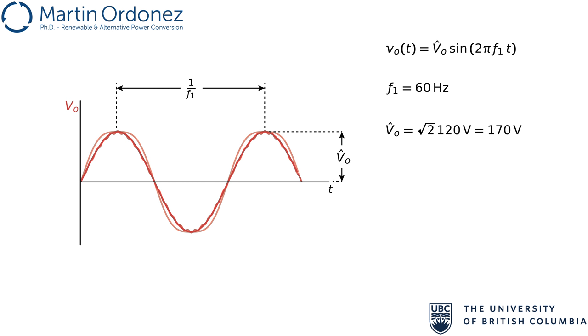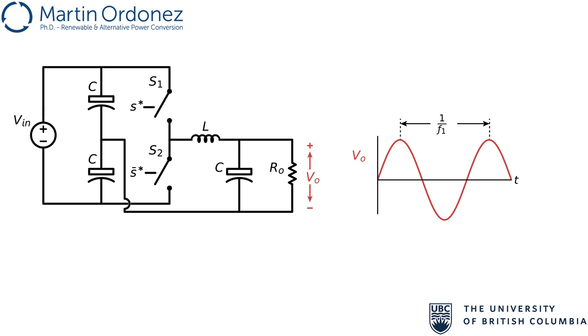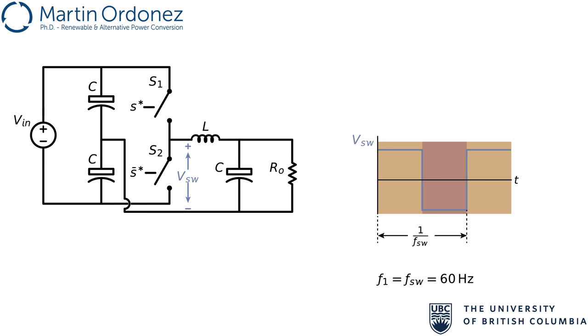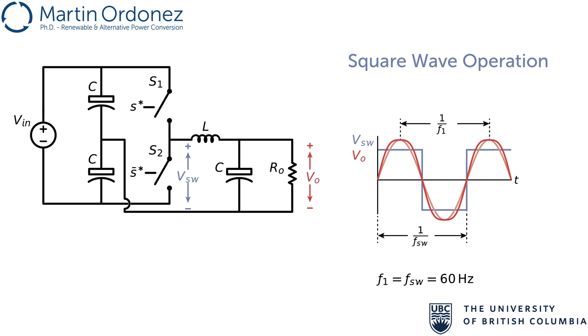One way to generate the output's sine voltage is to turn S1 ON half of the period of F1, 16.6 milliseconds, and turn S2 ON the other half. In this case, the switch voltage frequency is F1. After the output LC filter, the VOUT is a sine wave, but it will contain low-frequency harmonics, making it look more like a square. We call this operating mode square wave operation, and it will require a large LC filter.